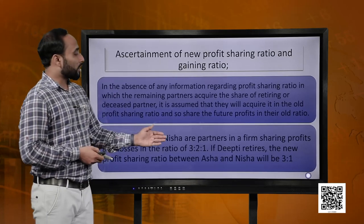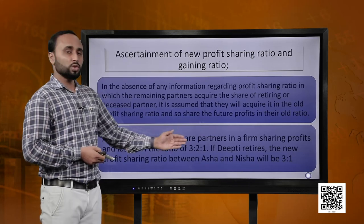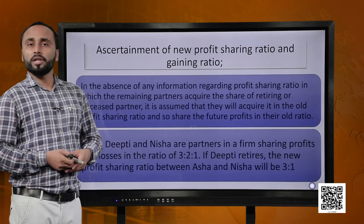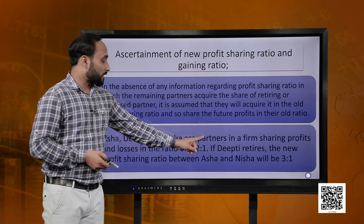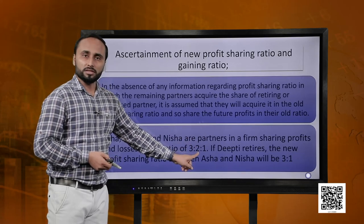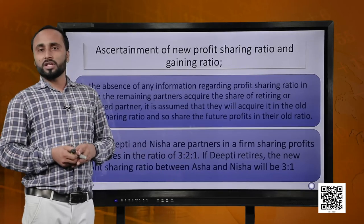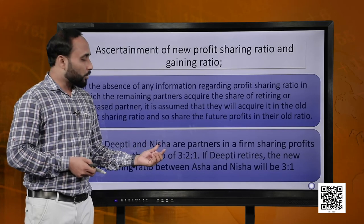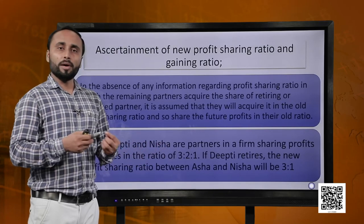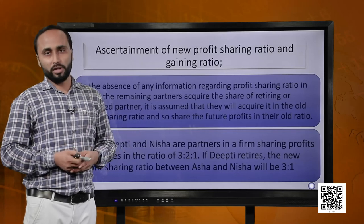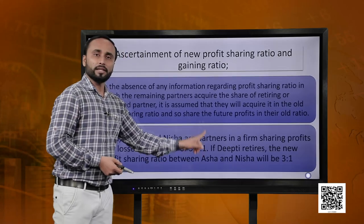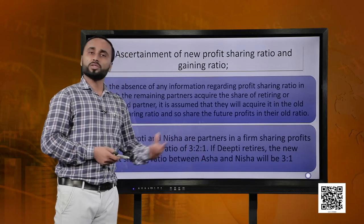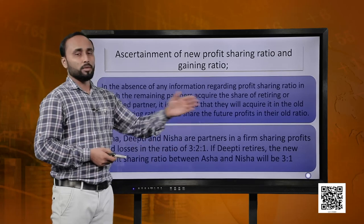Asha, Deepti and Nisha are partners. Their profit sharing ratio is 3:2:1. Deepti retires and there is no information about the new ratio. Deepti's share was 2/6. Since there is no information, we assume Asha and Nisha will keep sharing profits in the same ratio as before — which is 3:1. So in the absence of any information, Asha and Nisha will share future profits in 3:1, which becomes their new ratio.